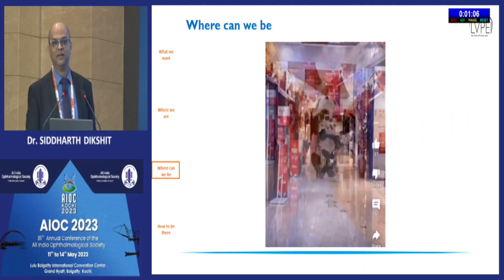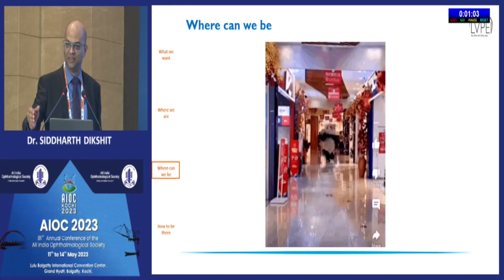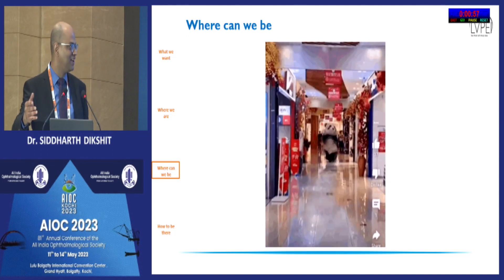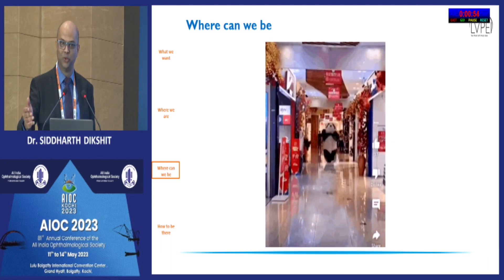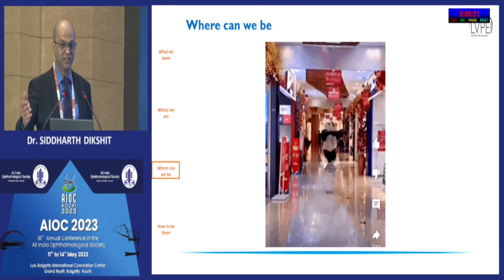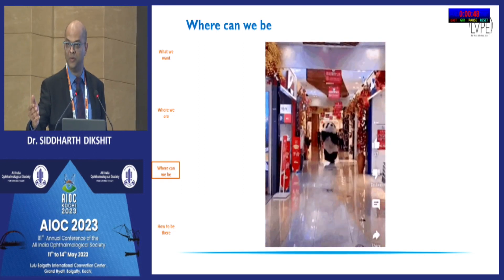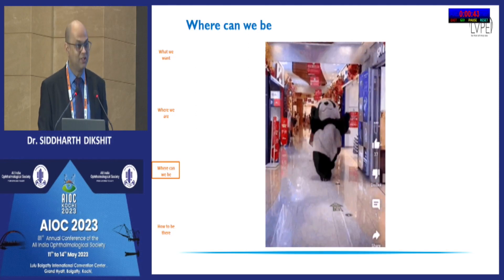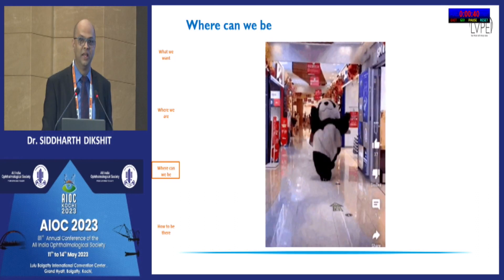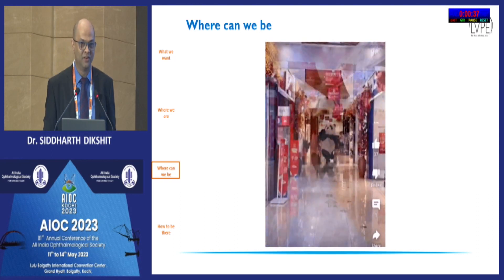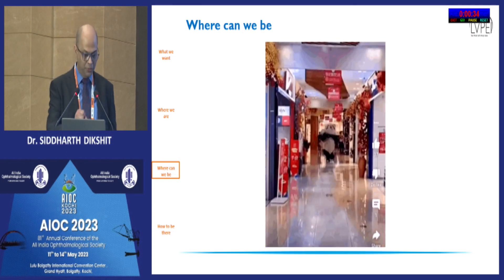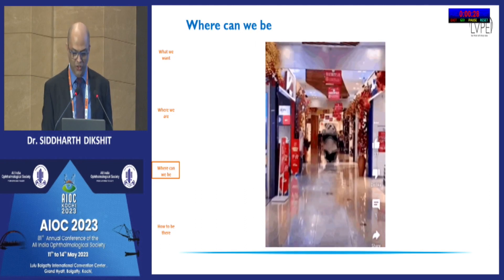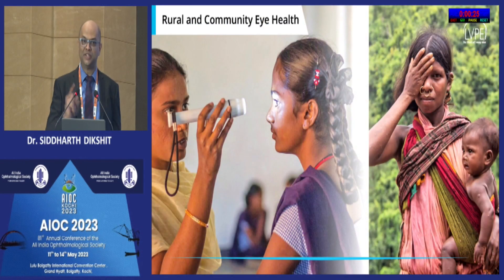Where can we be? Can we go to a mall, buy a burger, and while that burger is getting ready, go to a kiosk, get a fundus photograph done, and be told whether you have glaucoma, diabetic retinopathy, or ARMD — all with a single click? I don't think that day is very far because there are huge commercial interests being involved. We cannot stop it from happening, so it is our responsibility to pick up the right players who will set up that kiosk in a mall close to your home.